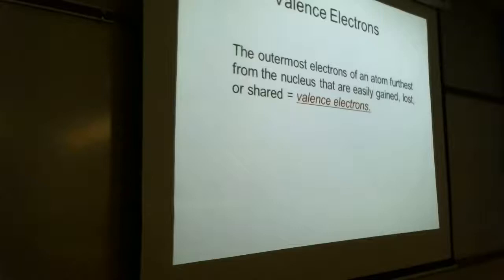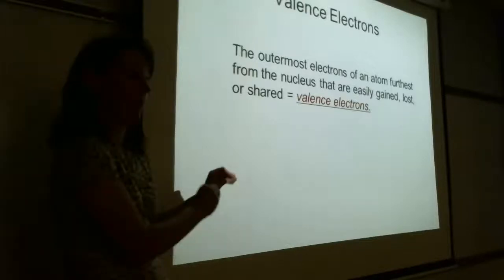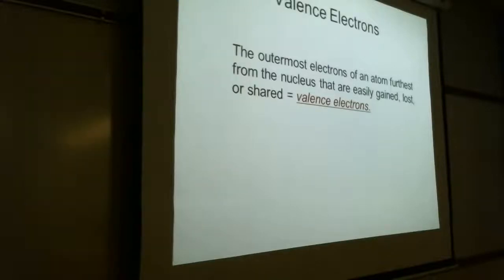We're going to be talking specifically about groups today because we're talking about ions. I don't usually refer to a specific period — I'll usually say group two elements versus period three. Now let's talk about valence electrons. Valence electrons are the ones that are easily gained, lost, or shared.